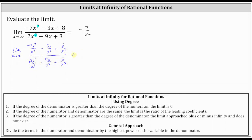Next, we simplify. In the numerator, negative seven x to the seventh divided by x to the seventh is negative seven, minus three x divided by x to the seventh is three divided by x to the sixth, plus eight divided by x to the seventh doesn't simplify.